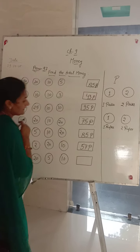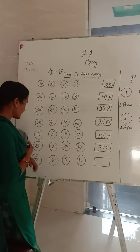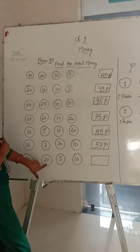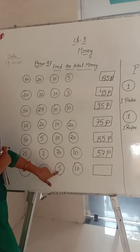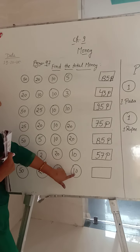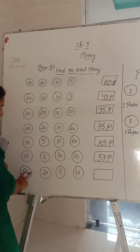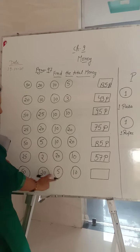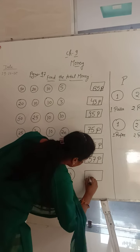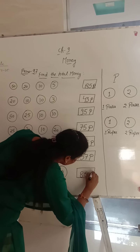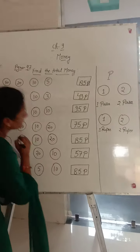And the last one is 50, 50, 50, 50, 50 — 60, 70, 80 plus 5 — 85 paisa.